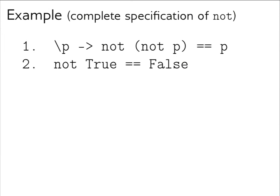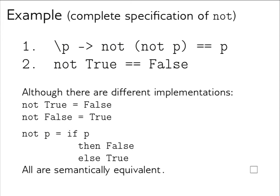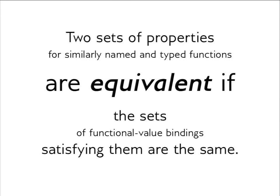Here is a complete specification of `not`: `not (not p) = p` and `not True = False`. This is a complete specification — only the function `not` satisfies it. Note that although there are different implementations of `not`, all are semantically equivalent; these are just two different ways of implementing the function.